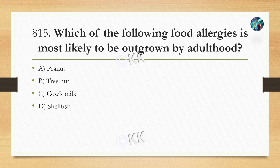Which of the following food allergies is most likely to be outgrown by adulthood? Option A: peanut, Option B: tree nut, Option C: cow's milk, Option D: shellfish.